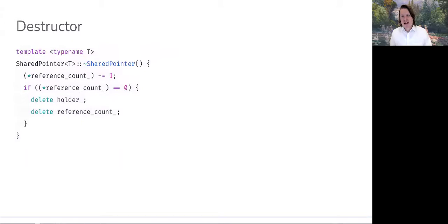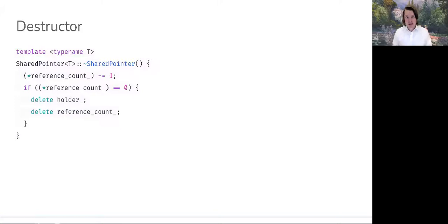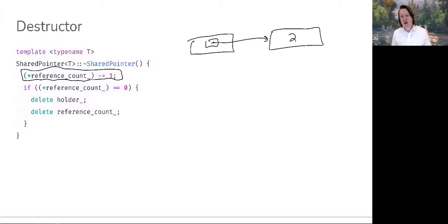The destructor is an interesting one. As shared pointer objects go out of scope or their lifetime ends, we're not always necessarily freeing the dynamically allocated resources pointed to by holder and reference_count. The reason is that there can be multiple shared pointer objects engaging in shared ownership of some resource. So whenever a destructor is called on any of our shared pointer objects, we first decrement the reference count by one. Remember, reference_count is a pointer to an object on the free store containing the reference count.